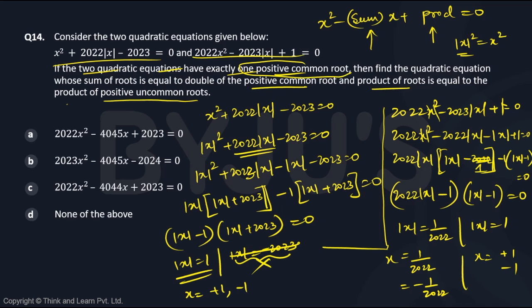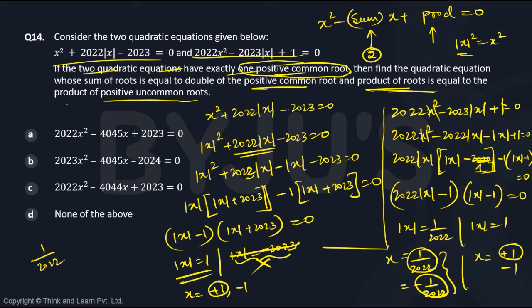Looking at both sets of roots, there is only one positive common root, and that is clearly +1. The sum of the roots of the new equation must equal double the positive common root: double of 1 is 2. The product of roots equals the product of the positive uncommon roots. The non-common roots are +1/2022 and −1/2022; the only positive one is +1/2022. The product of a single value is that value itself, so the product of roots is 1/2022.